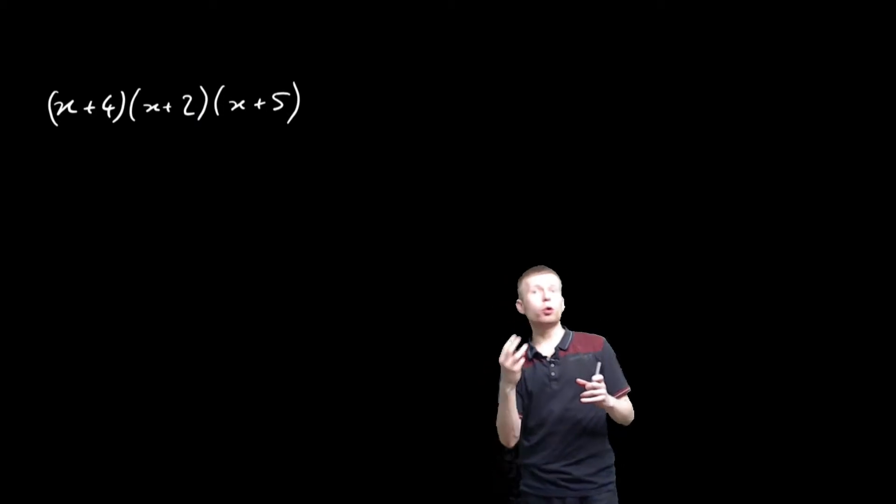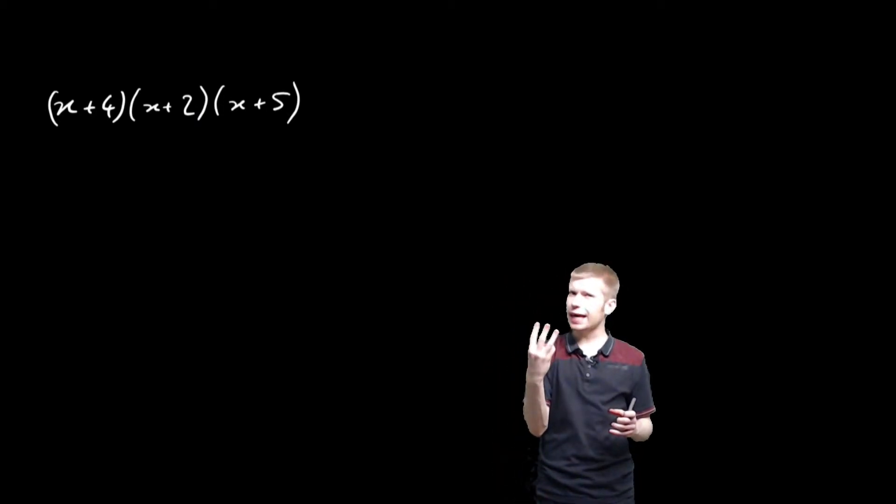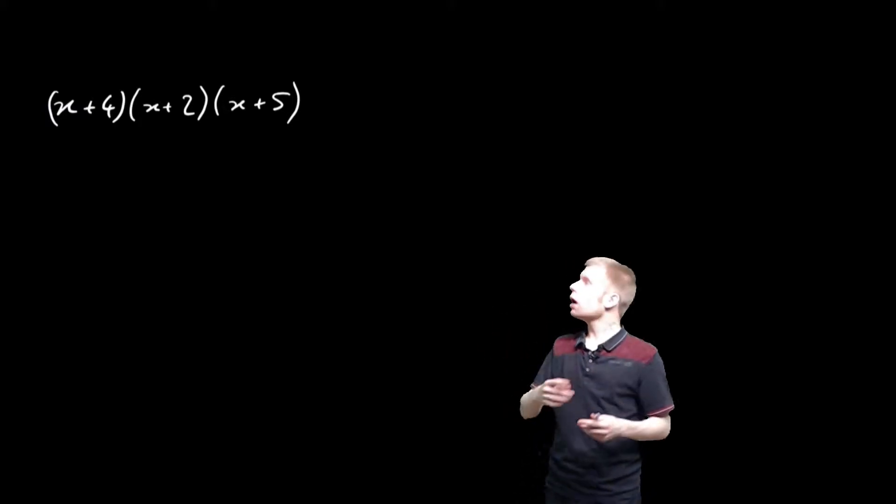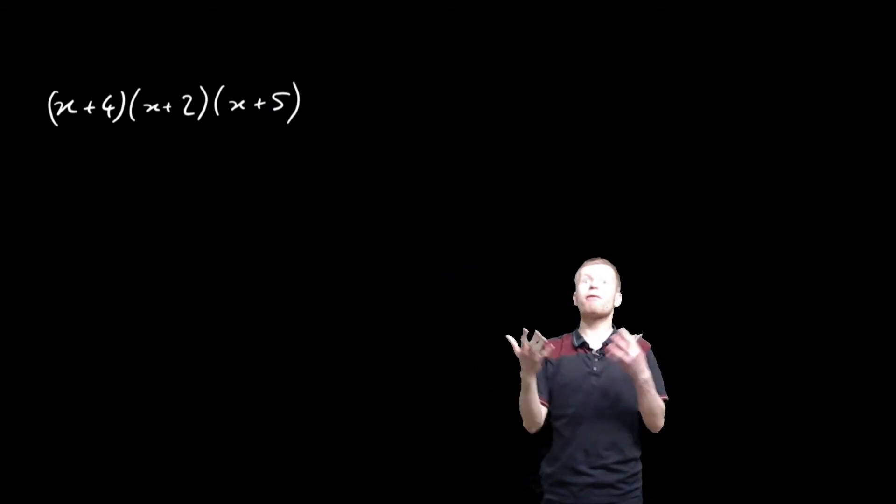Well, a cubic is of order 3, which means it crosses the axis in three places, and those three roots where it crosses the x-axis come from three factors. Three factors there, three things we multiply together, therefore I know it must be a cubic.